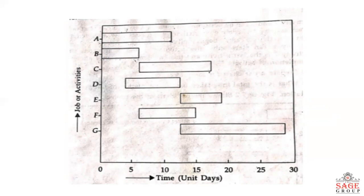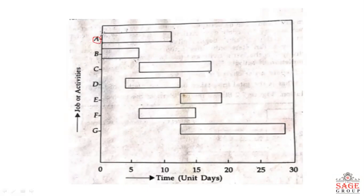In this area, each task and activity is shown. You can see how many days each activity takes. For example, activity A takes 10 days. Simultaneously, we can start B activity along with A. C activity starts only after B work is completed.